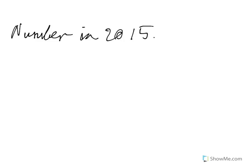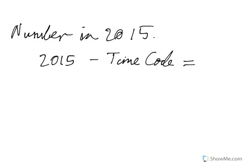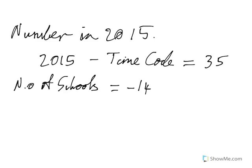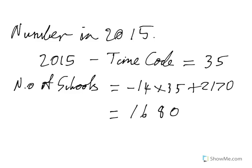For 2015, we need to work out the time code. From 1981 to 2000 is 20 years, and then another 15 years gives us 35. So the number of schools equals negative 14 times 35 plus 2170, and when we use our calculator we find the number of schools is 1680. That one was straightforward — we used our data directly without doing anything extra.